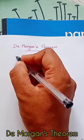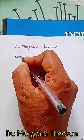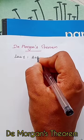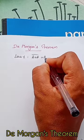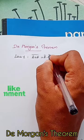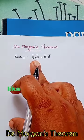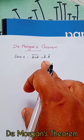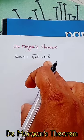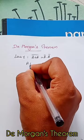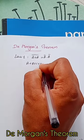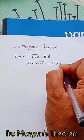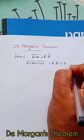De Morgan's theorem. Law 1: (a + b) bar is equal to a bar dot b bar. That is, the complement of the sum of variables is equal to the product of their individual complements. Similarly, (a + b + c + d + ...) bar is equal to a bar dot b bar dot c bar dot d bar dot etc.